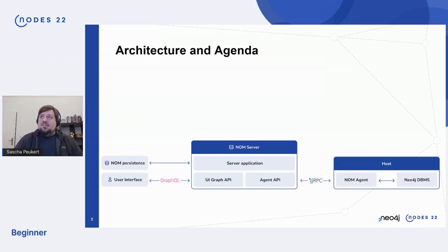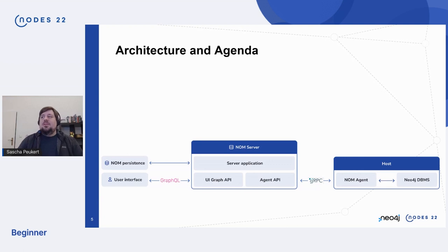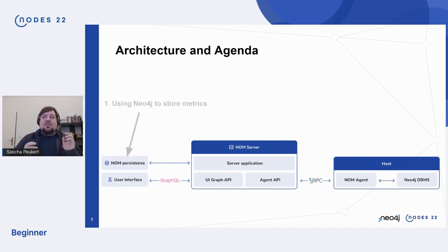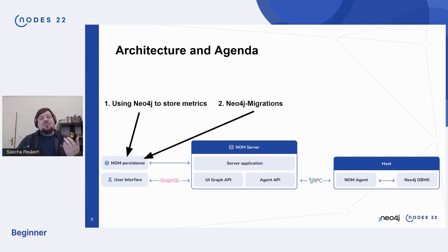So what do I want to talk about? This is the general architecture of Ops Manager. You can see there's a host instance where your Neo4j is running that you want to monitor and administrate. There's this little NOM agent running on it — a little Go program that sends all the metrics to the NOM server. That NOM server also has a little persistence database that is, of course, a Neo4j database. I won't talk about the user interface because I'm a backend developer and I know where my limitations are. So let's talk about how to use Neo4j to store metrics — that's the first thing. And then I also want to talk about how we can take what is inside that persistence and migrate between different data models.